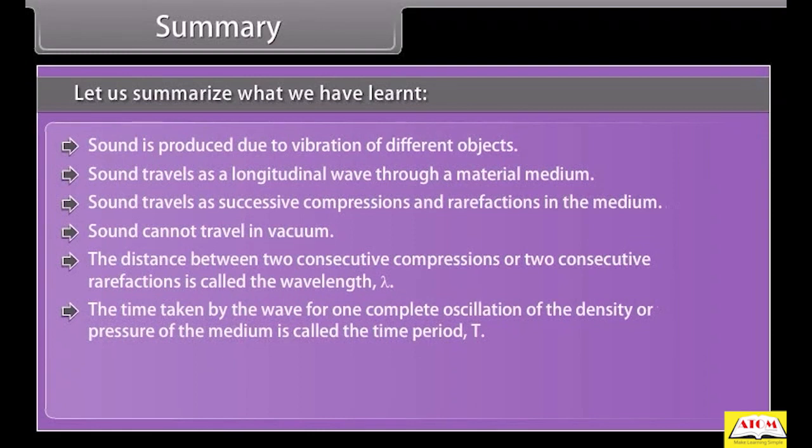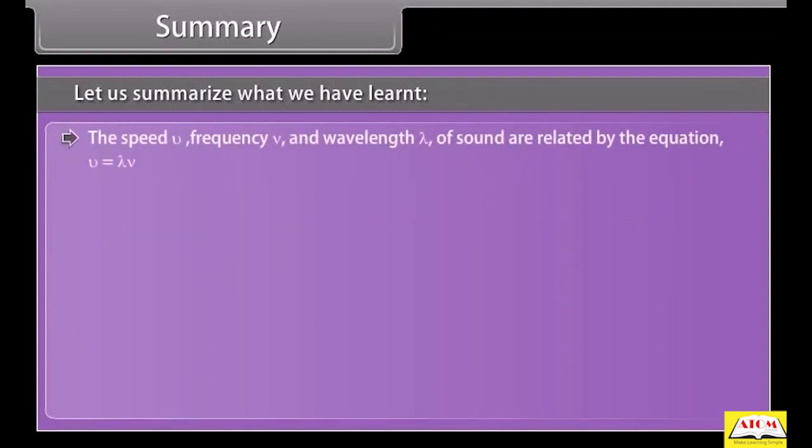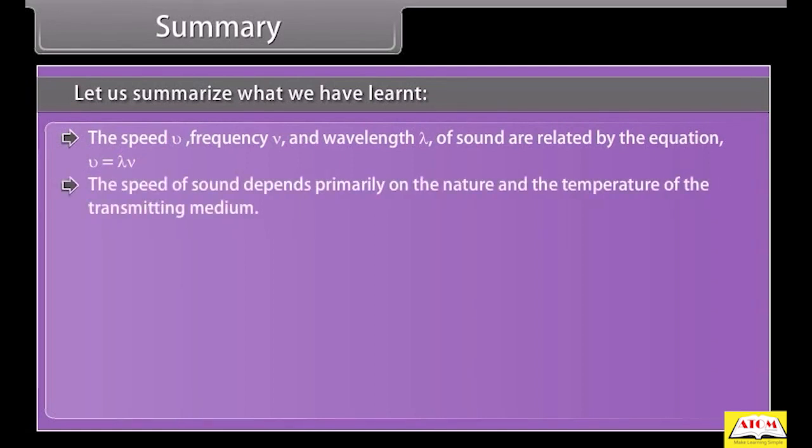The time taken by the wave for one complete oscillation of the density or pressure of the medium is called the time period T. The number of complete oscillations per unit time is called the frequency, nu is equal to one upon T. The speed v, frequency nu, and wavelength lambda of sound are related by the equation v is equal to lambda into nu. The speed of sound depends primarily on the nature and the temperature of the transmitting medium.